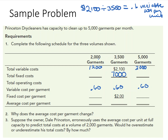So if my fixed costs are $7,000 and I only make 2,000 garments, $7,000 divided by 2,000 gives me $3.50 as the fixed cost per garment. And 3.50 times 2,000 we know is $7,000 — so total fixed costs across all columns are $7,000. Now $7,000 divided by 5,000 garments gives a fixed cost per unit of $1.40.